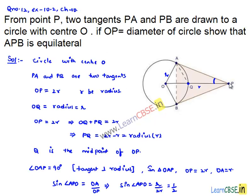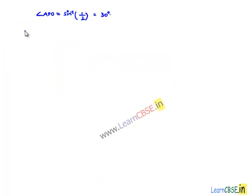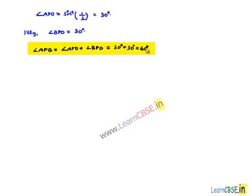Similarly, if we consider the lower part, we get the angle BPO is equal to 30 degrees. Therefore, angle APB can be now written as sum of angle APO plus angle BPO, that is equal to 30 degrees plus 30 degrees which is 60 degrees.